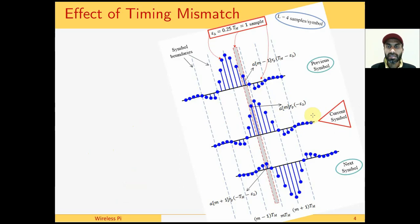We take a simple example with L equals 4 samples per symbol and just three different symbols in succession. This is the current symbol, this is the future symbol, this is the past symbol.